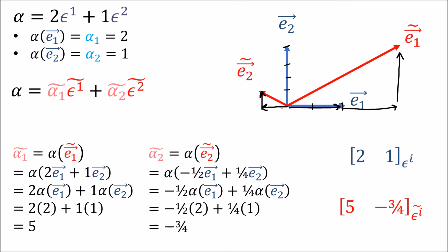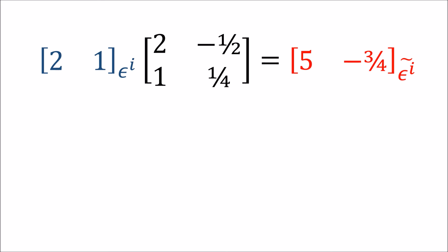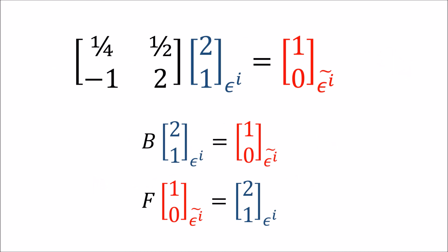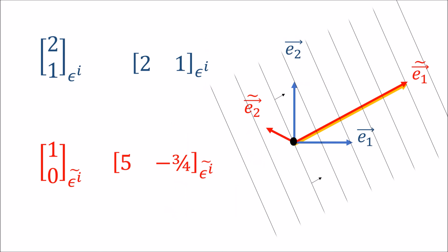So this covector alpha has components [2, 1] in the old dual basis, but it has components [5, -3/4] in the new dual basis. You'll notice that the old and new covector components are related by this matrix, which is the forward matrix. With covector components, forward brings us from old to new and backward brings us from new to old. This is actually the opposite of what we did for vector components under a change of basis.